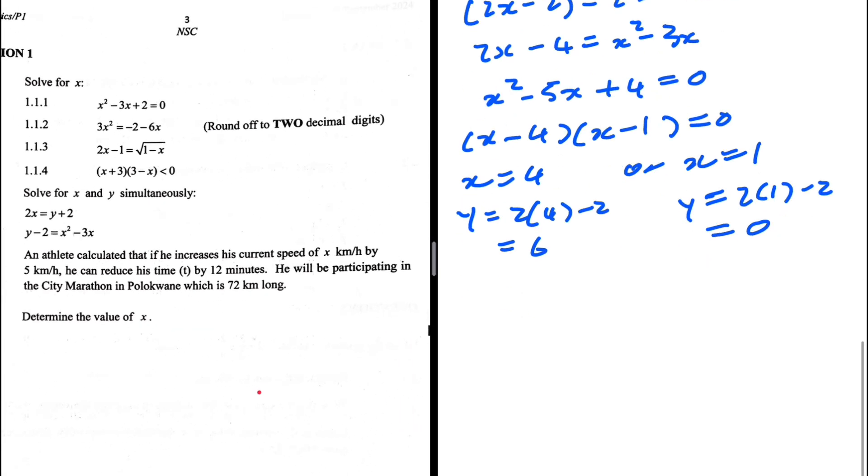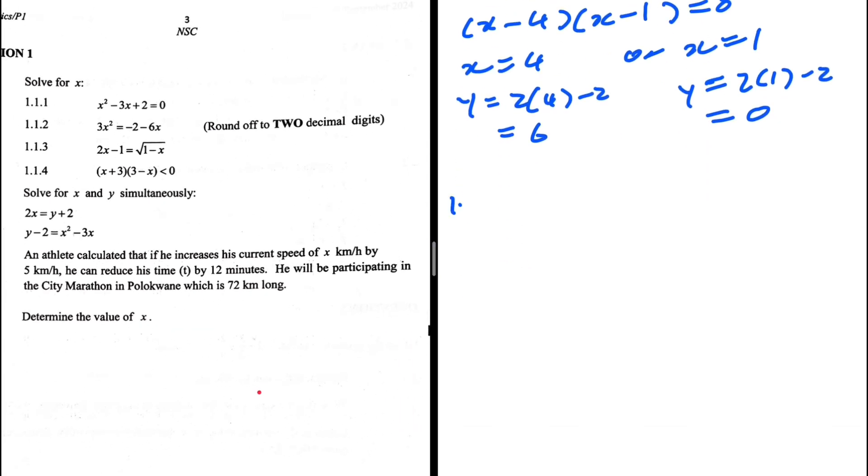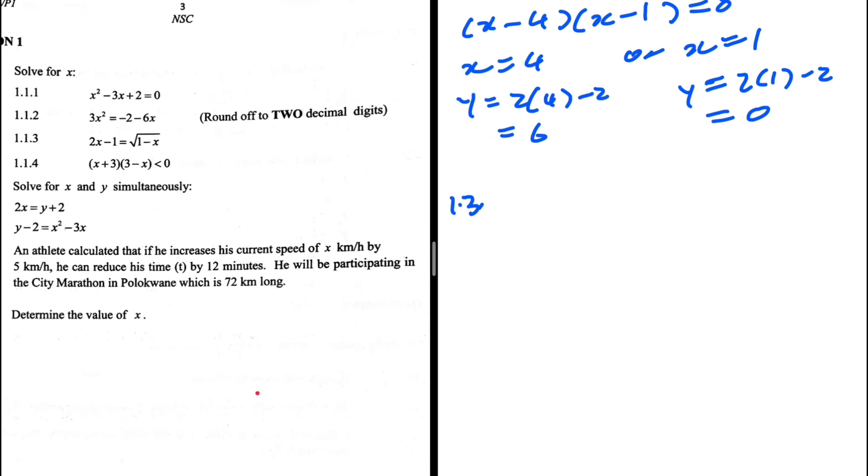Let's take a look at 1.3. An athlete calculated that if he increases his current speed of x kilometers by 5 kilometers per hour, he can reduce his time by 12 minutes. He will be participating in the city marathon which is 72 kilometers long. Determine the value of x.